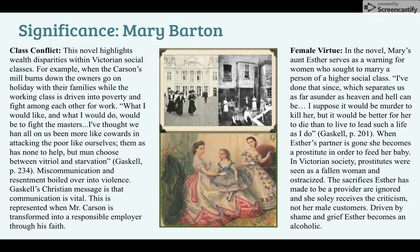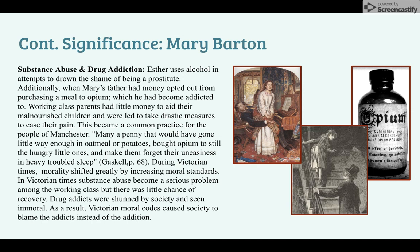Regarding female virtue: in the novel, Mary's Aunt Esther serves as a warning sign for women who sought to marry a person of a higher social class. 'I have done that which separates us — thunder from heaven and hell can be. I suppose it would be murder to kill her, but it would be better for her to die than to lead a life such as I do.' When Esther's partner is gone, she becomes a prostitute to feed her baby. In Victorian society, prostitutes were seen as fallen women and ostracized. The sacrifices Esther made to be a provider are ignored, and she solely receives the criticism, not her male customers. Driven by shame and grief, Esther becomes an alcoholic.